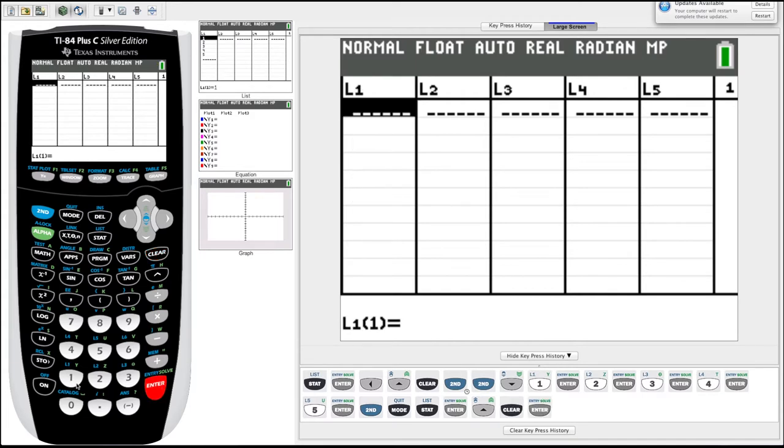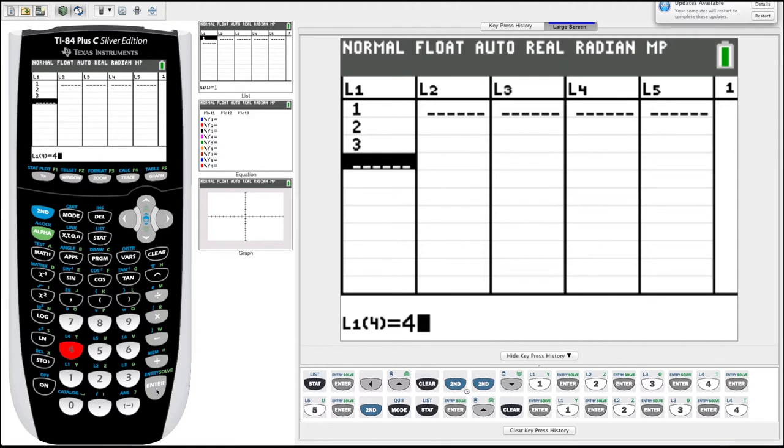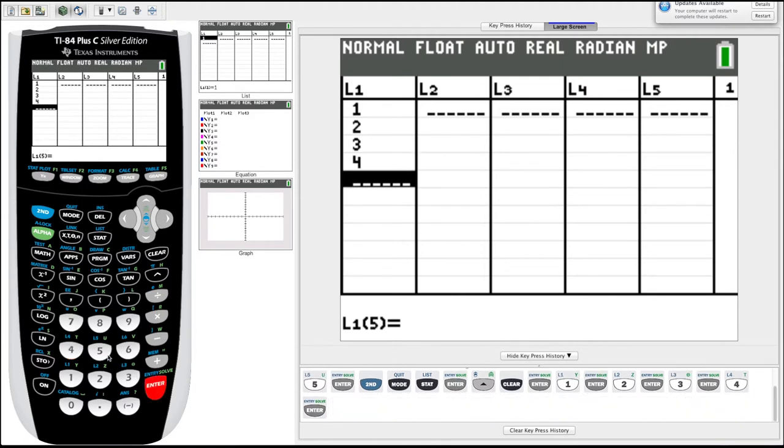So now let's enter some data into list one. Just type the number you want, hit enter. We'll do like five points, enter three, enter four, five.